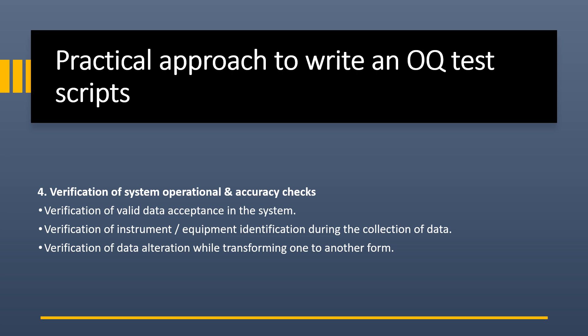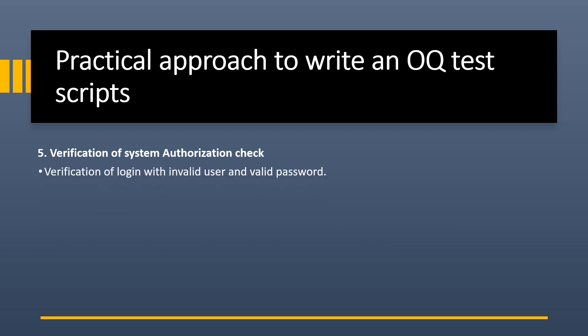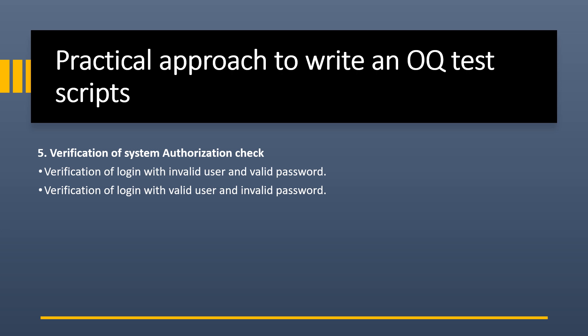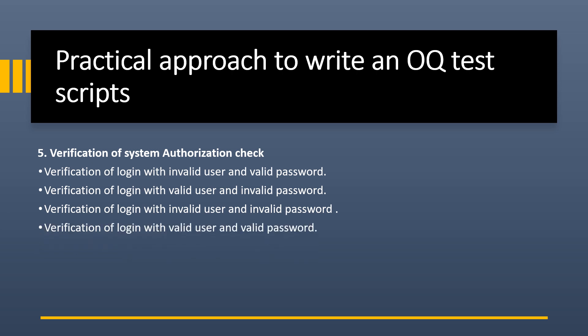Fifth is verification of system authorization check. This includes: verification that the system does not allow login with an invalid user and valid password; verification that the system does not allow login with a valid user and invalid password; verification that the system does not allow login with an invalid user and invalid password; and verification that the system does allow login with a valid user and valid password.